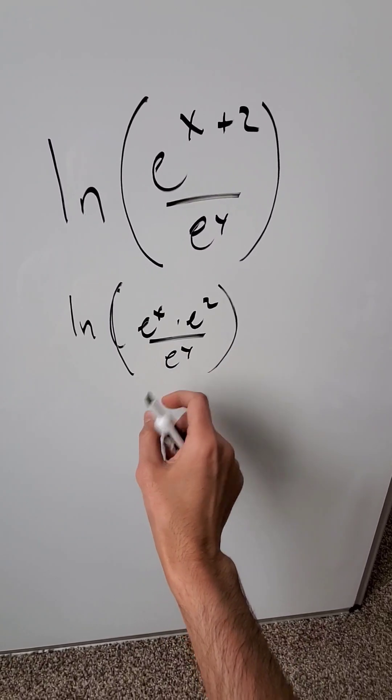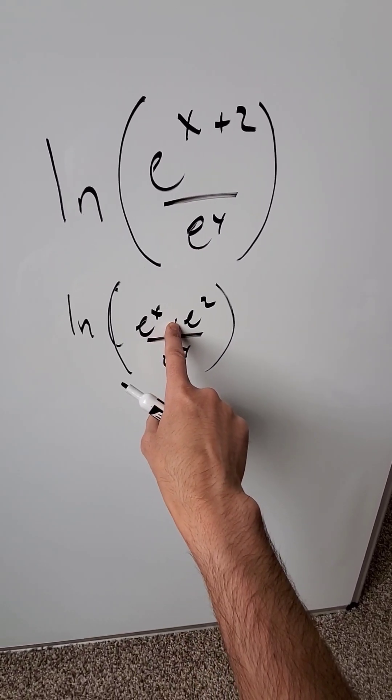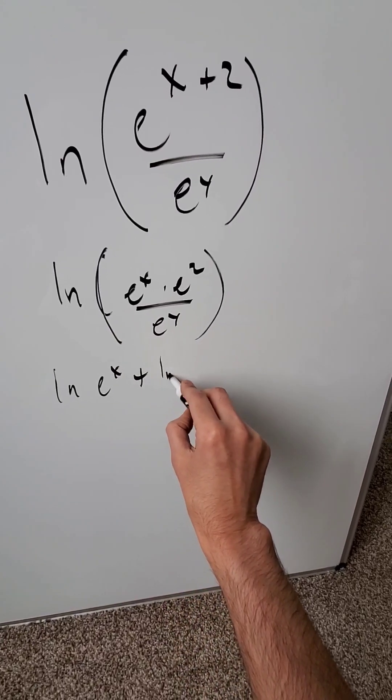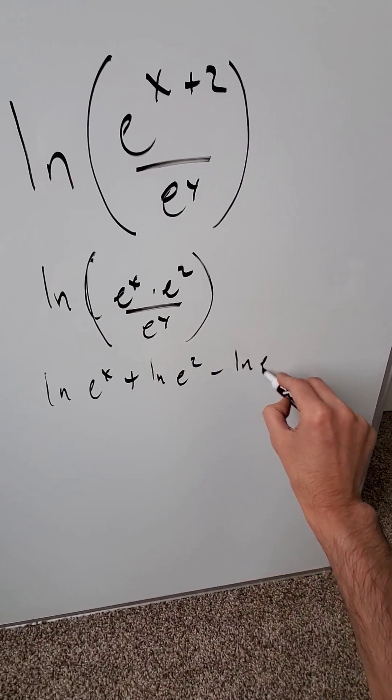Under a common log we have this, but under individual logs the product will become a plus, the quotient will become a minus. And look, natural log e to the x plus natural log e squared minus natural log e to the y.